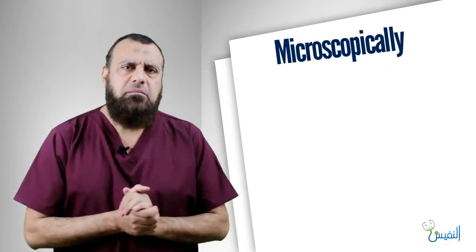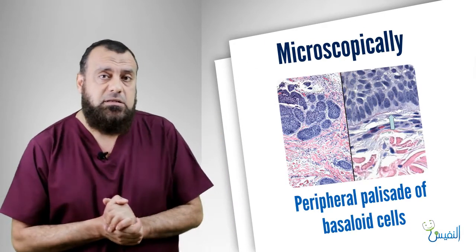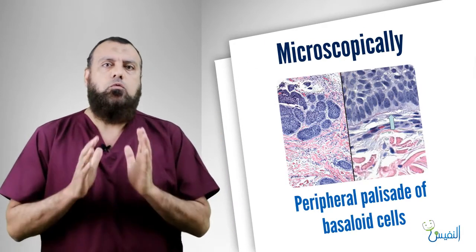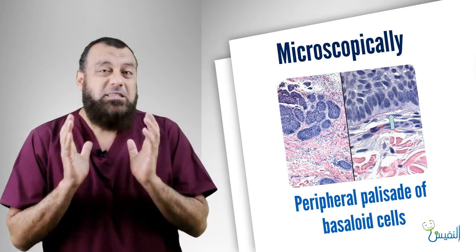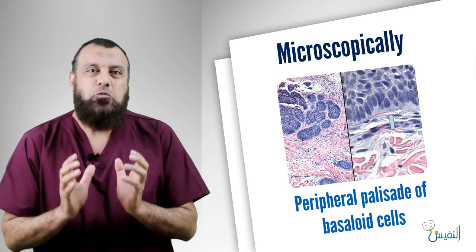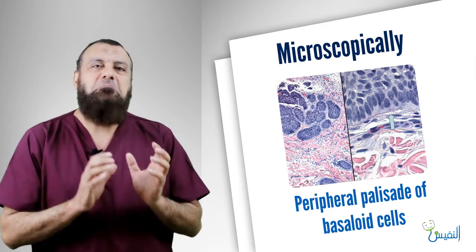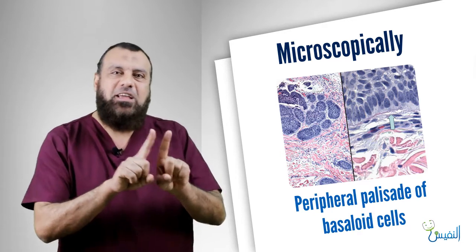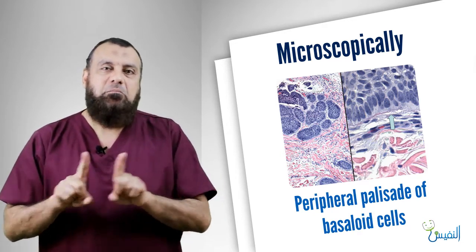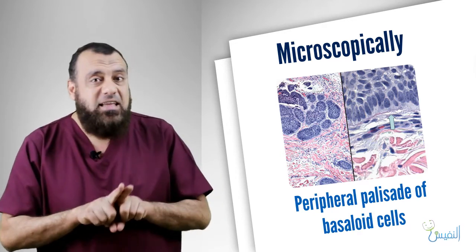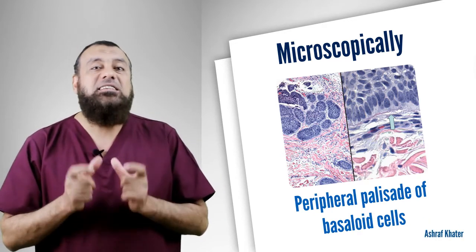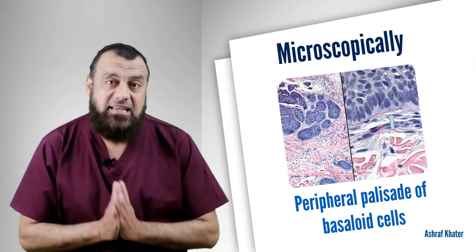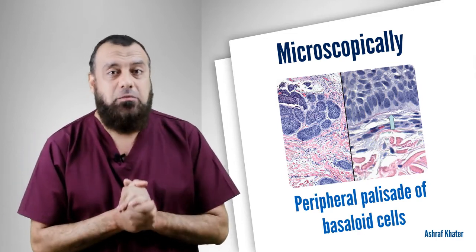What about the microscopic examination of basal cell carcinoma? We can mention basaloid cells with peripheral palisading. Palisading means cells are arranged in rows — peripheral palisading of basaloid cells. This is the classic microscopic finding of basal cell carcinoma.